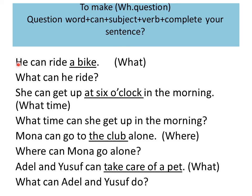For example: he can ride a bike. Make a question with 'what?' What can he ride? Ride is the verb. Can I write 'what can he ride a bike?' No. I'm asking about a bike, so: what can he ride? He can ride a bike.